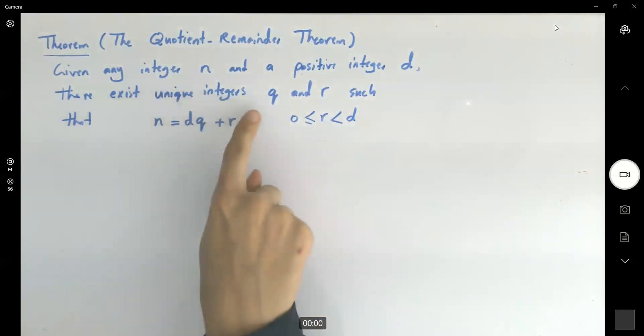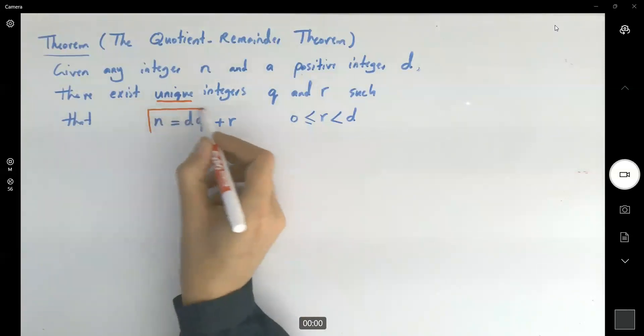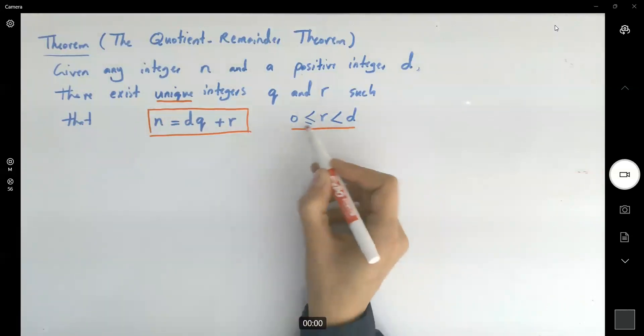So there exists unique integers. That n can be written as the multiplication of d and q plus the remainder r. The remainder is bounded between 0 and d.